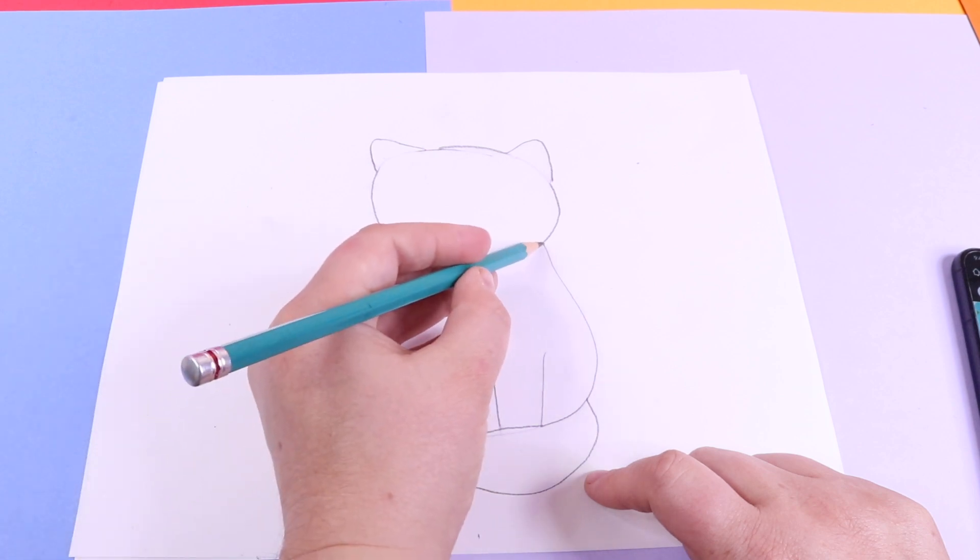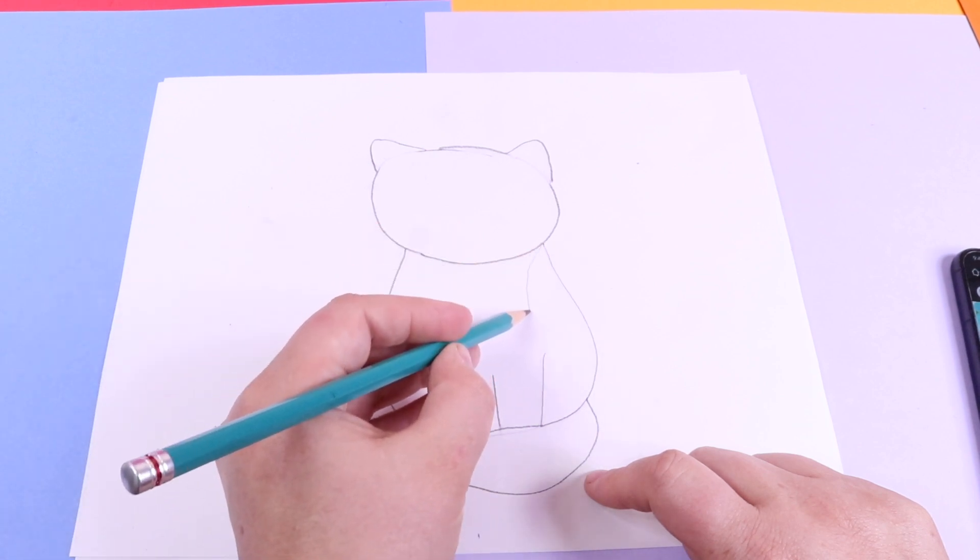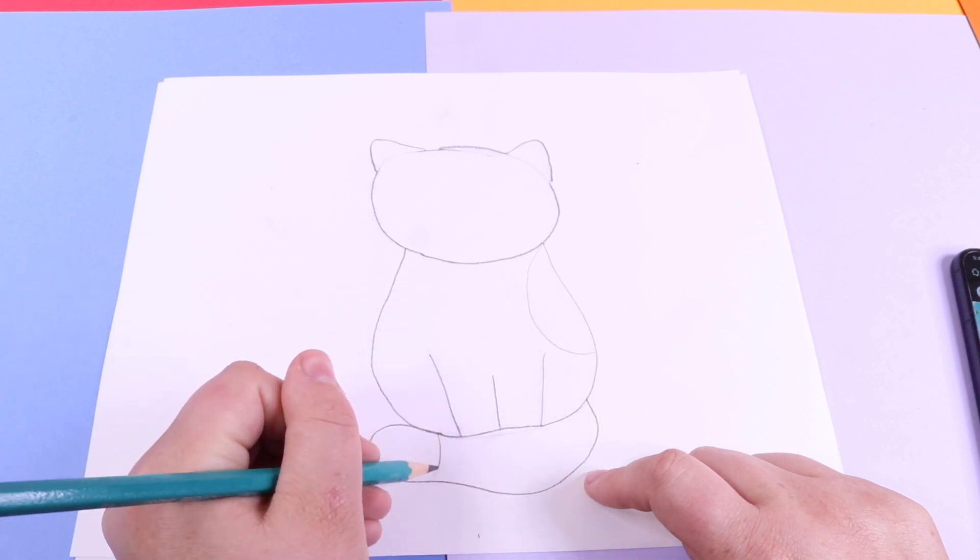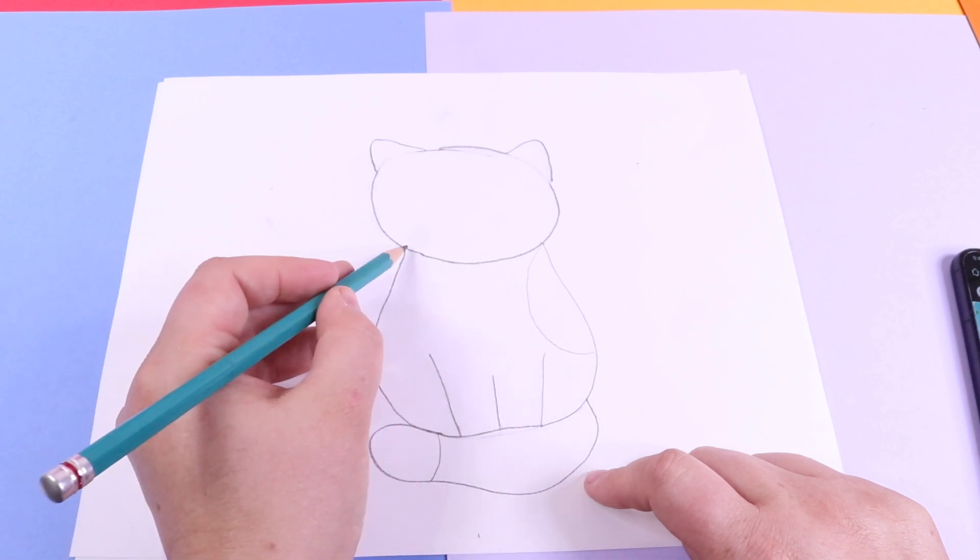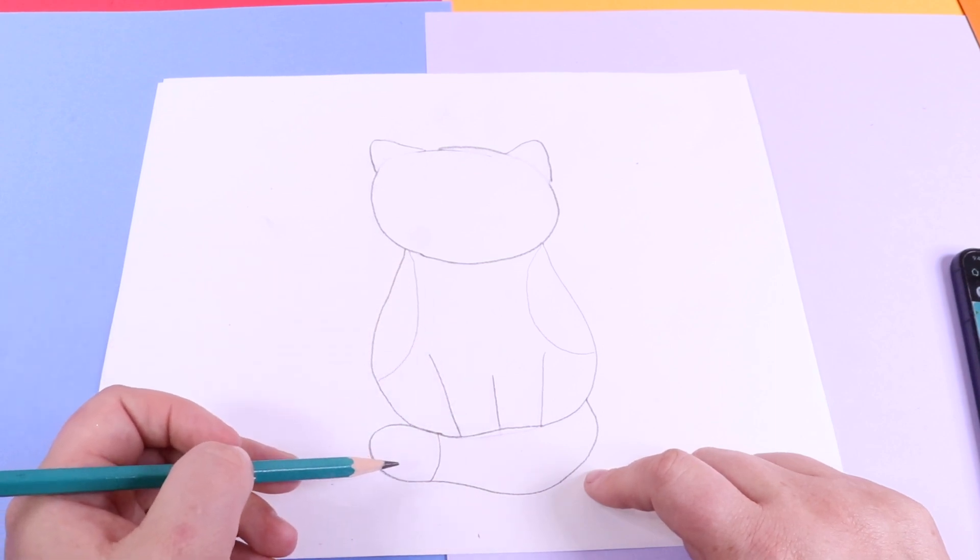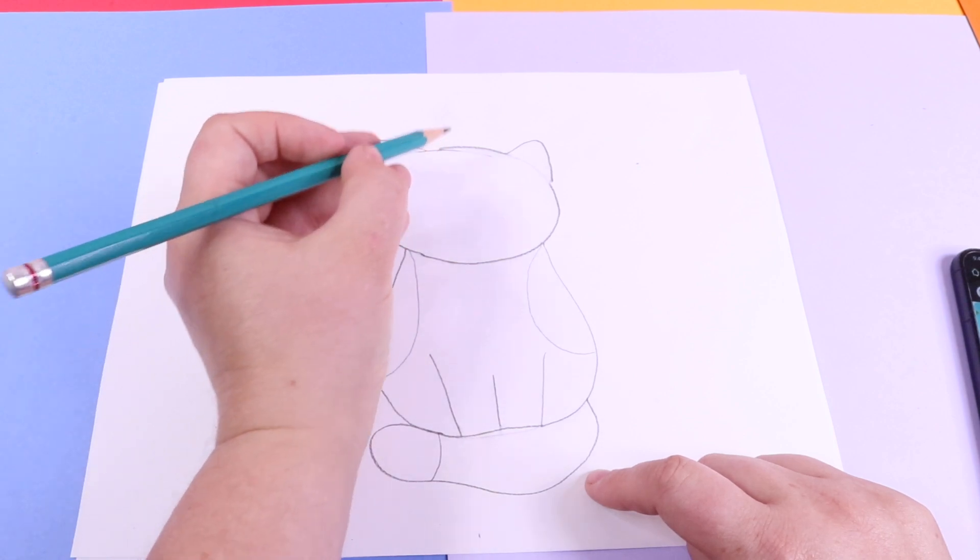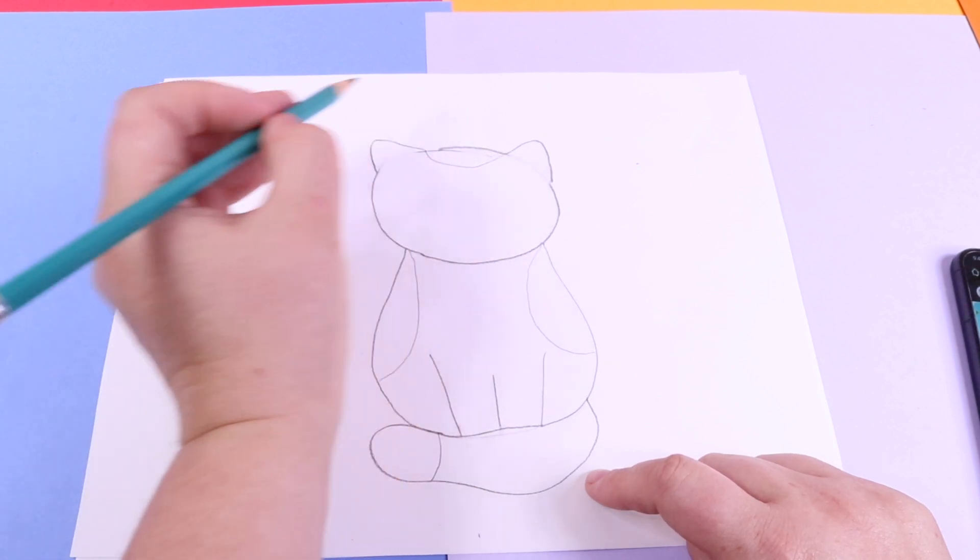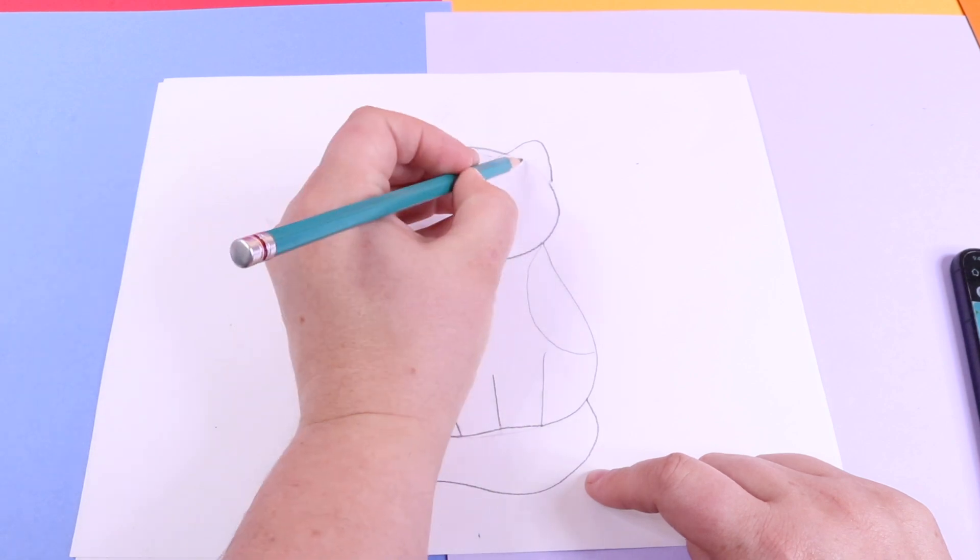And we're going to add some spots to the cat. You can add your spots anywhere you like. I want mine on the tail and the two sides of the body. I also want a spot up here on the head. And some indents for the ears.